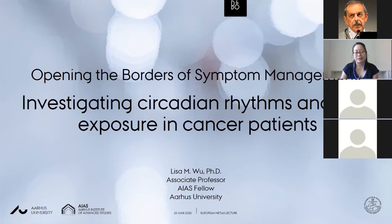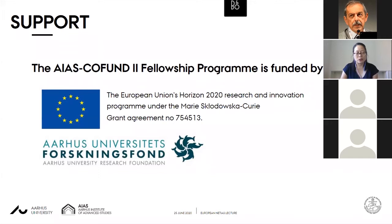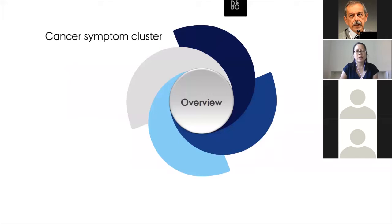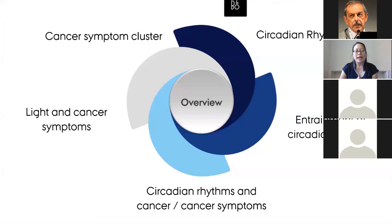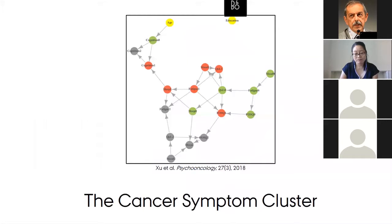This work is specifically with respect to light exposure in cancer and cancer patients. My sources of support are the EU Horizon 2020 Research and Innovation Program and the Aarhus University Research Foundation. I'll begin by talking about what a cancer symptom cluster is, circadian rhythms — our 24-hour daily rhythms — entrainment of circadian rhythms, and how those rhythms are linked with cancer and cancer symptoms, and then light and cancer symptoms.